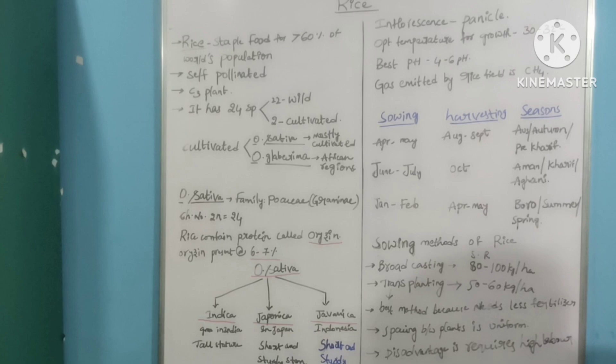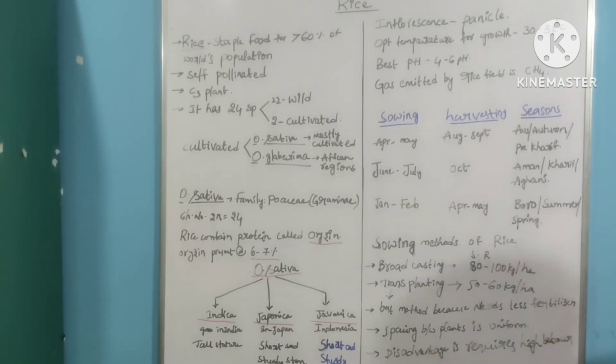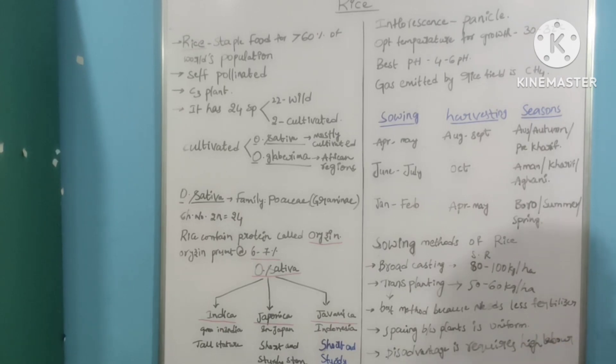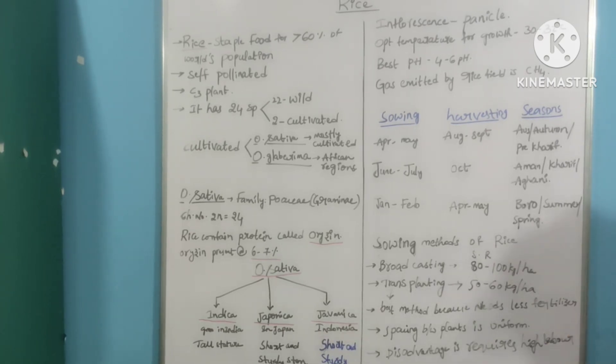Indica is tall stature. Javanica is short stature and steady stem. Indica, as it has tall stature, will lead to lodging because of its tall stature.